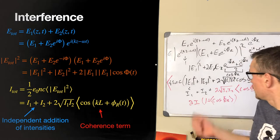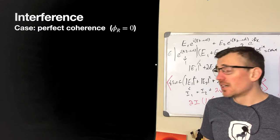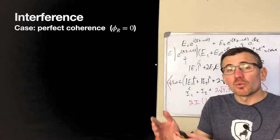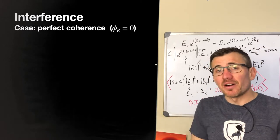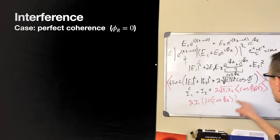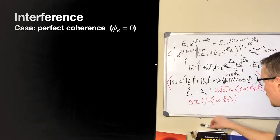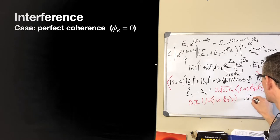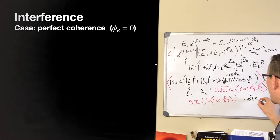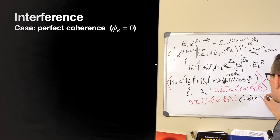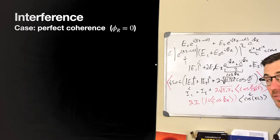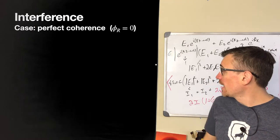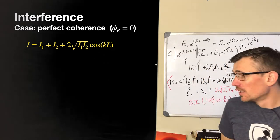For perfectly coherent light, imagine a monochromatic beam where the random phase phi r goes to zero. In that case, the time average of cosine phi r is just cosine of kl, which is a constant since l and k are fixed. So we get just a cosine term. If we imagine changing this path length, the phase of the cosine goes back and forth.